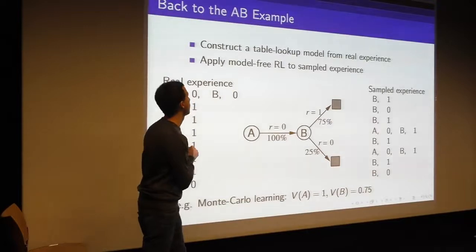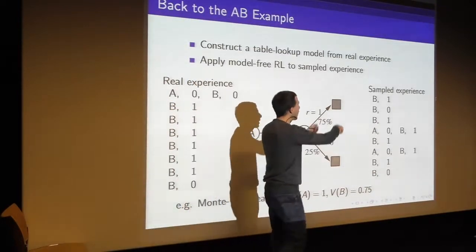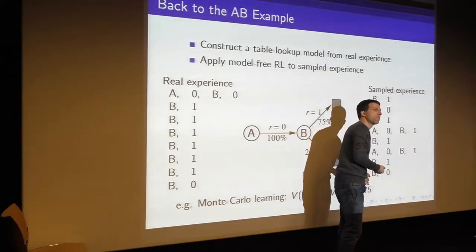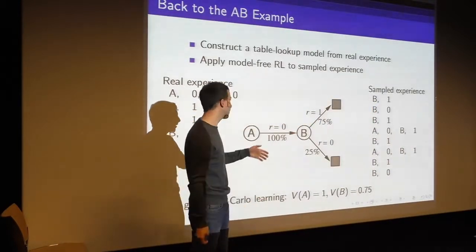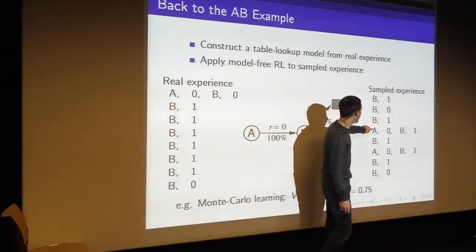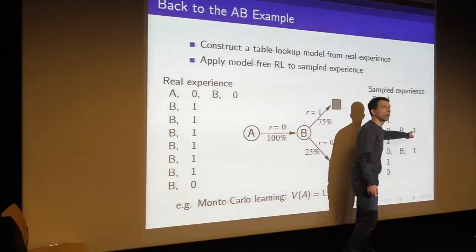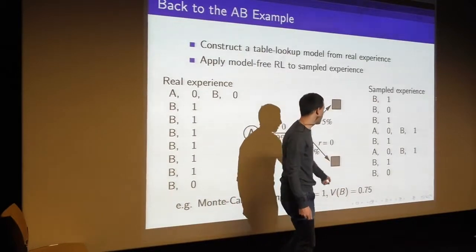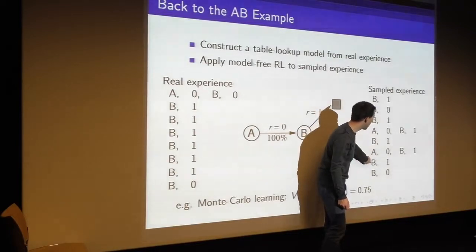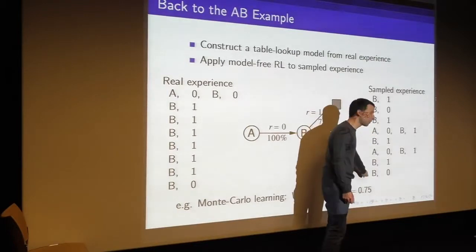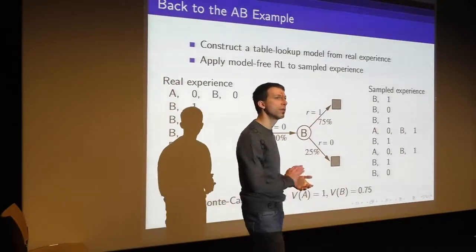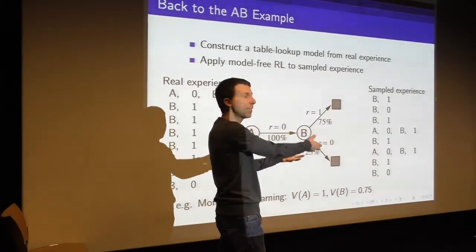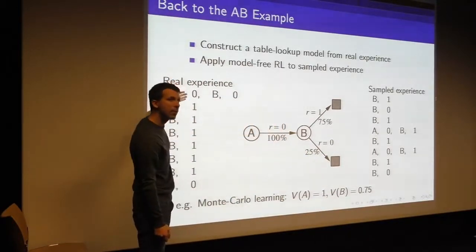So the final step: we've started with our real experience, we've built a model, we've sampled experience. Now let's apply Monte Carlo learning to these trajectories — that's a canonical model-free reinforcement learning algorithm. We would find that the value of A — I started in A, ran a trajectory and got a return of 1, and again a return of 1 — so we estimate the value of A is 1. The value of B would be: six trajectories where B led to a reward of 1 and two trajectories with zero, so the value of B is six-eighths, or three-quarters.